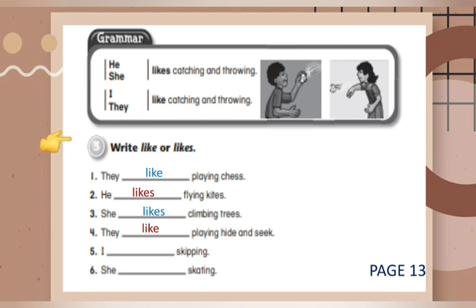Number five: I blank skipping. I is a plural subject, so we use like. I like skipping. Saya suka lompat tali. Number six: She blank skating. She is a singular subject yang artinya subjeknya terdiri dari satu orang, so we write down likes. She likes skating. Dia suka bermain sepatu luncur.